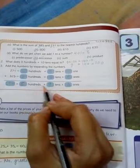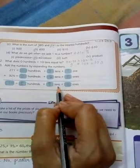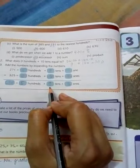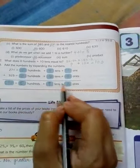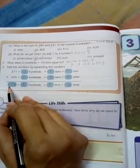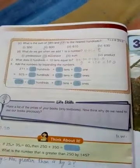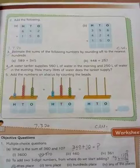So what is our answer? 5 hundreds, 9 tens. Students, 9 tens is nothing but 90. 5 hundreds, 9 tens, 6. This is our answer: 596.